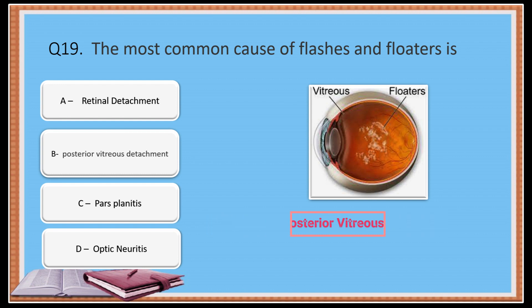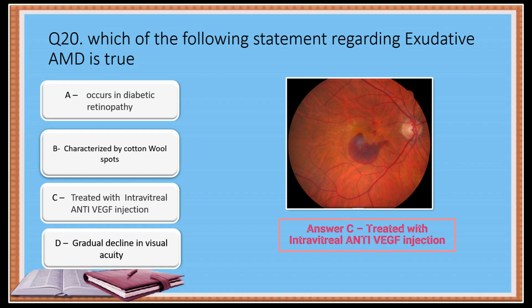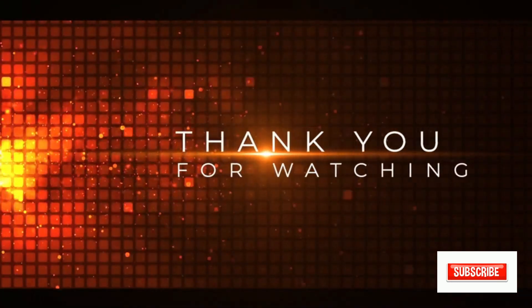The correct answer is Option B: Posterior vitreous detachment. Last question: Which of the following statements regarding exudative age-related macular degeneration is true? Option A: Occurs in diabetic retinopathy. Option B: Characterized by cotton wool spots. Option C: Treated with intravitreal anti-VEGF injection. Option D: Gradual decline in visual acuity. The correct answer is Option C — it is treated with anti-VEGF injection. Hope you like the video. For more optometry-related content, subscribe to my channel. Thank you.